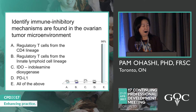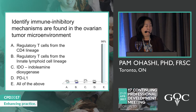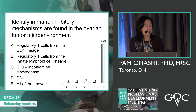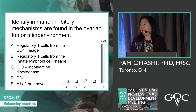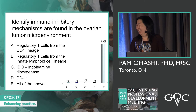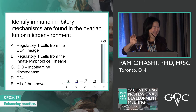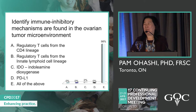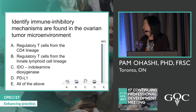A third polling question asks to identify immune inhibitory mechanisms in the ovarian tumor microenvironment: A) regulatory T cells from the CD4 lineage, B) regulatory T cells from the innate lymphoid cell lineage, C) IDO/indolamine, D) PDL1, or E) all of the above. With 35 responses, 98% correctly answered E — all of the above. As the presenter noted, they were listening carefully.